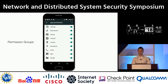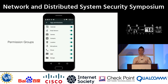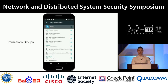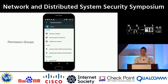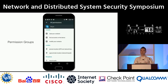Moreover, Android organizes permissions in what is known as permission groups, and it does that to reduce user burden. For example, a group might consist of a number of dangerous permissions, and for usability purposes, if the user grants one dangerous permission to an app, the system will automatically grant the remaining dangerous permissions to the app automatically.